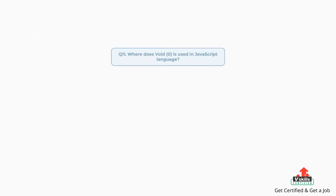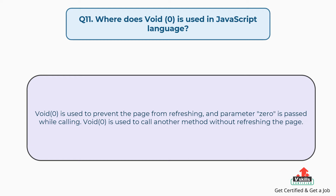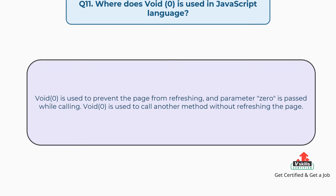Question number eleven: where is void zero used in JavaScript? Void zero is used to prevent the page from refreshing, and parameter zero is passed while calling. Void zero is also used to call another method without refreshing the page.